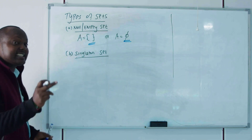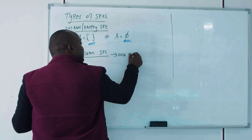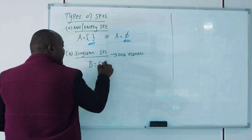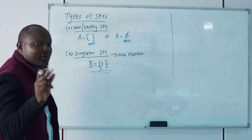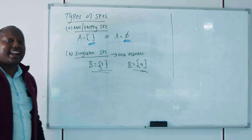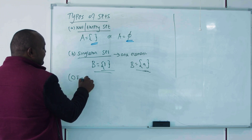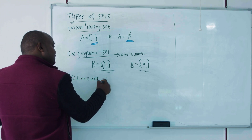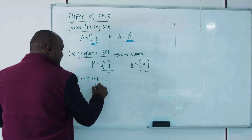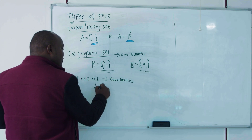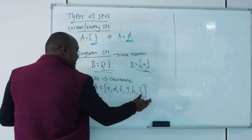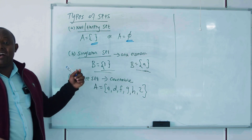The next type is the singleton set. As the name suggests, it is a set with only one element — for example, B = {a}. After that we have a finite set, which is a set with countable elements. For example, set A = {a, b, f, g, h, z} — you can count all its elements.